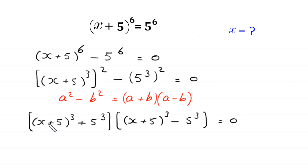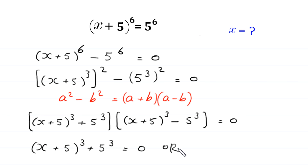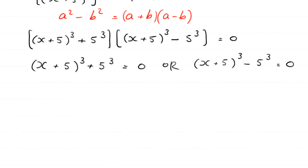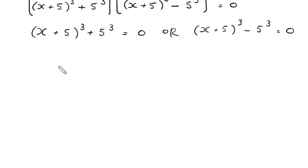From here, either (x + 5)^3 + 5^3 is equal to 0, or (x + 5)^3 minus 5^3 is equal to 0. We have two cases: this is Case 1 and this is Case 2.